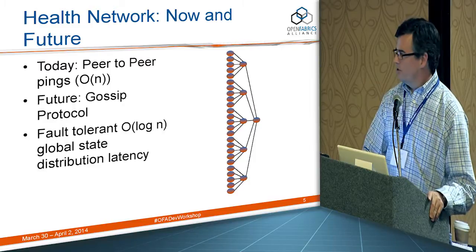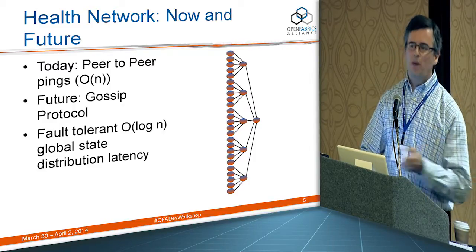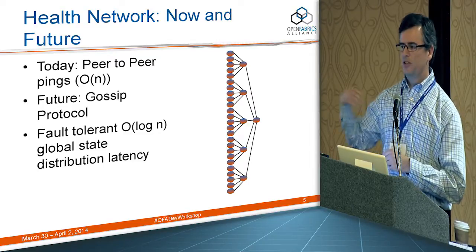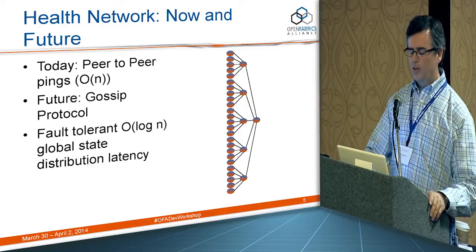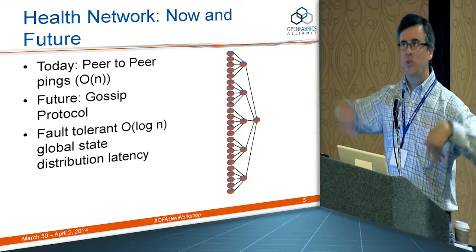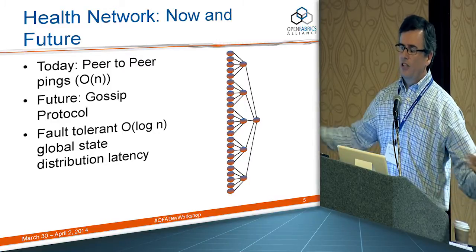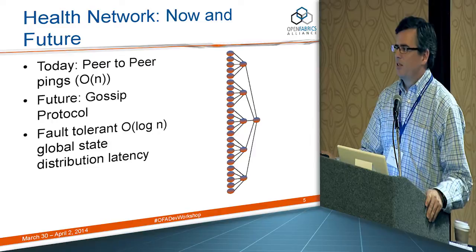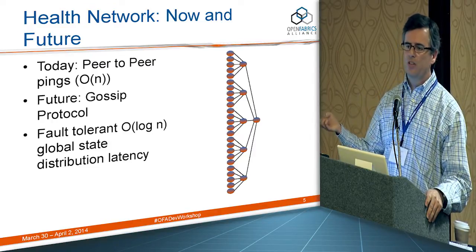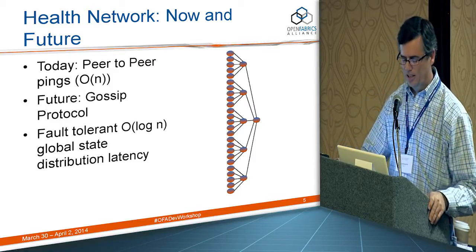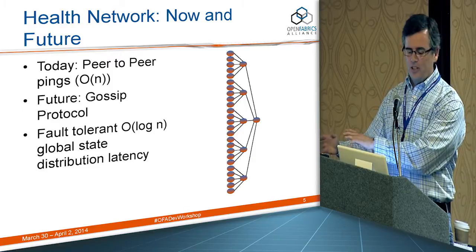What we'd like to do in the future is use a gossip protocol, where one node tells state information to two nodes, they tell two nodes each, and so on — resulting in order-log fault distribution latency across all nodes. Even with a million-node cluster and a latency of 100 milliseconds or less, you can typically discover a missing node in about two seconds with this distribution model. This is something we'd like to move towards.